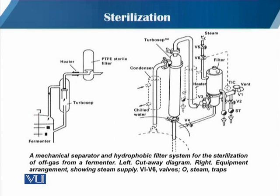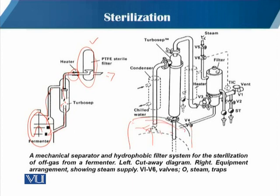In this slide, the first diagram shows the fermenter and the exhaust air path. Water condensation returns back to the fermenter, and the air passes through a heater and then through a PTFE filter to sterilize the air before it exits. In the second diagram, the exhaust air first passes through a condenser coil where water condenses and drops back into the fermentation vessel, then goes into a chamber, and again any condensation returns back.